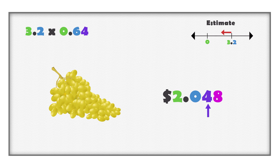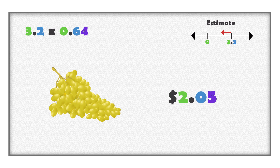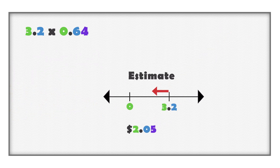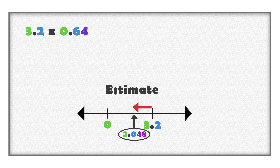Cents are out of one hundred, not one thousand. So round the answer to determine the correct amount of money. The eight thousandths is greater than five, so round the four hundredths to the next largest number, or five hundredths. The total cost of the grapes is two dollars and five cents. We estimated a product less than three and two tenths. If the product is close to what we estimated, we can be confident about our work and the answer. Is two and forty-eight thousandths less than three and two tenths?